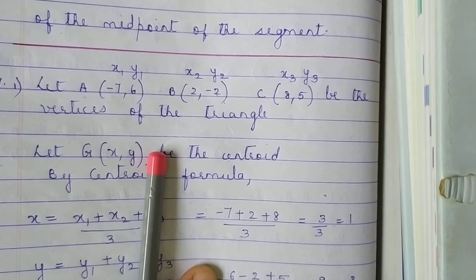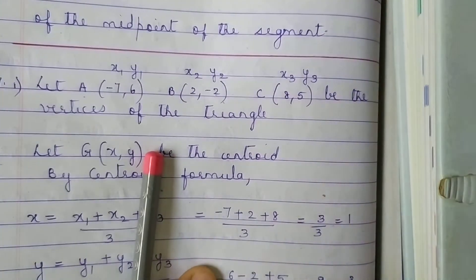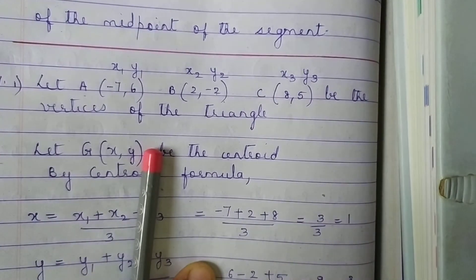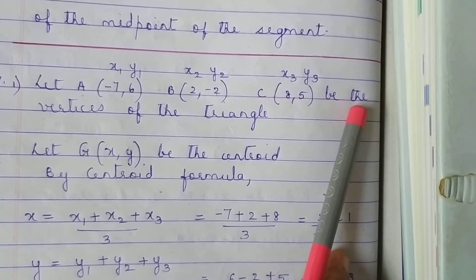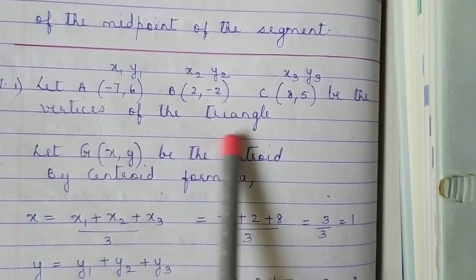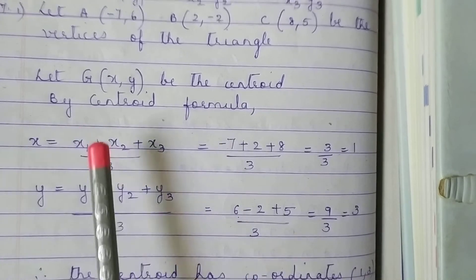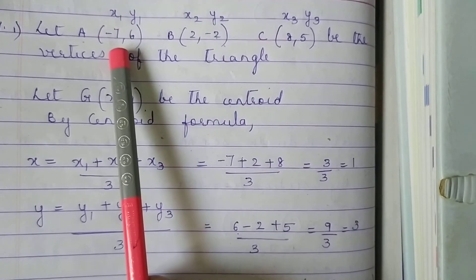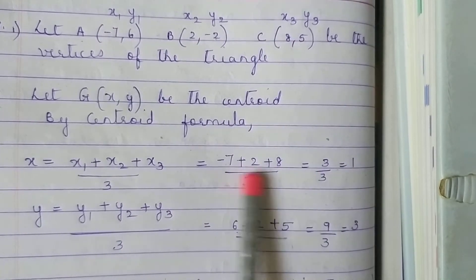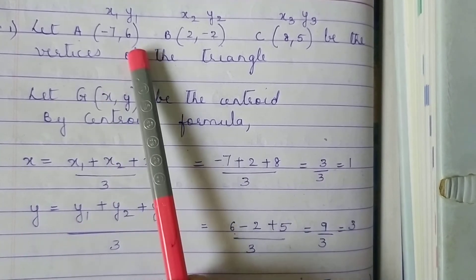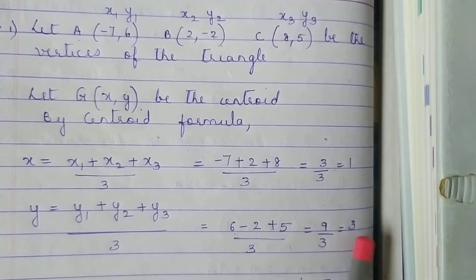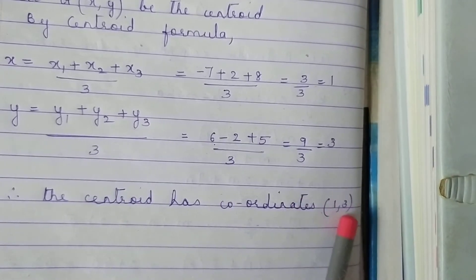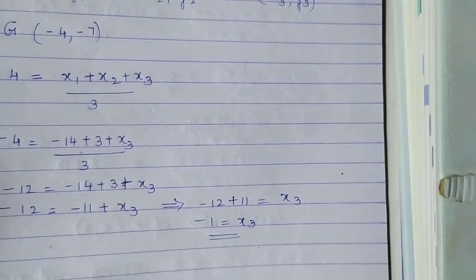Next we go to question number 7: find the centroid of the triangle whose vertices are given. You are given three points: (-7, 6), (2, -2), and (8, 5). Let A, B, C be the vertices and G(x, y) be the centroid. To find x: X1 plus X2 plus X3 by 3 equals minus 7 plus 2 plus 8 by 3 equals 3 upon 3, answer is 1. For y: 6 plus minus 2 plus 5 by 3 equals 9 by 3, answer is 3. Therefore the centroid has coordinates (1, 3). I have done the first one for you; the remaining two you will do yourself.